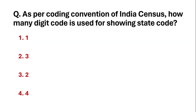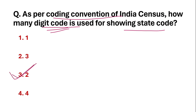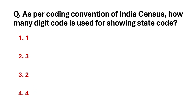As per the coding convention of the Indian census, how many digit codes are used for state codes? The answer is a two-digit code for state codes as per the coding convention of the Indian census.